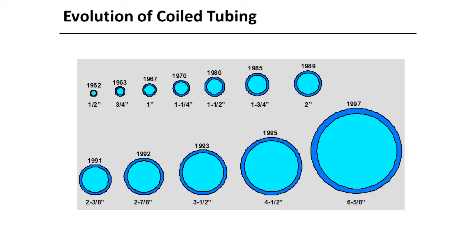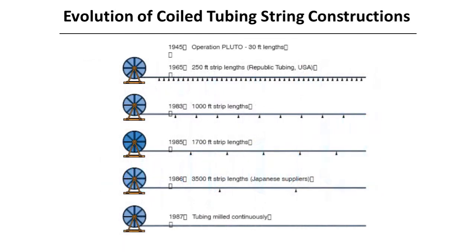This chart shows the evolution of coiled tubing. Half-inch coiled tubing was introduced in 1962. Three and a half inches is normally the largest size for conventional working coiled tubing units. Four and a half inches and larger are normally used for continuously milled pipelines. This chart shows the evolution of coiled tubing string construction. In 1945, it was 30 feet butt welded length for the Pluto project. In 1965, we had 250 feet butt welded length.